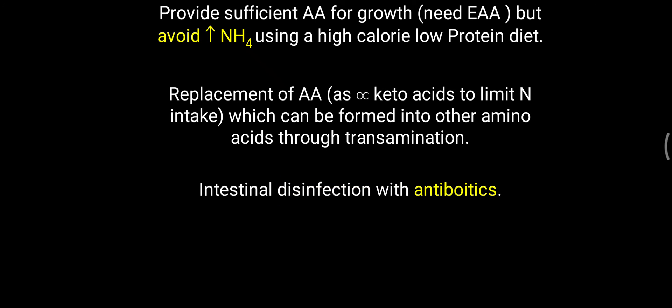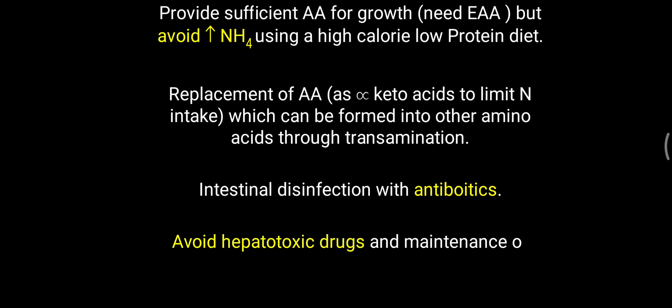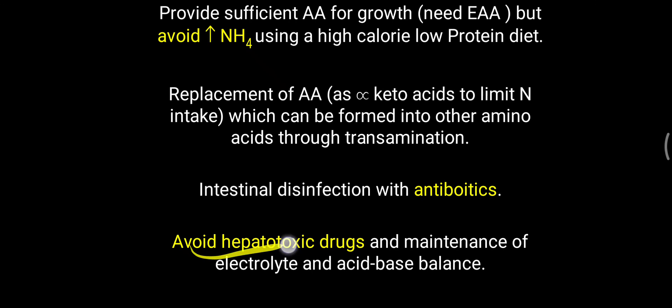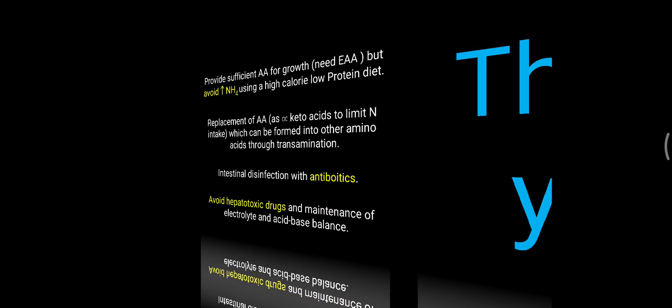Intestinal disinfection with antibiotics is also needed, because intestinal bacteria can produce ammonia and aggravate the condition. During urea cycle disorder, hepatotoxic drugs must be avoided. Electrolyte balance — sodium, potassium — and acid-base balance must be maintained, as respiratory alkalosis is commonly seen in urea cycle disorder. These are the main lines of treatment, along with arginine and benzoate.